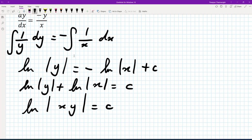But what we can do here is to work out what mod xy is by taking the antilog. And that will give me xy on its own is equal to e to the power of c.